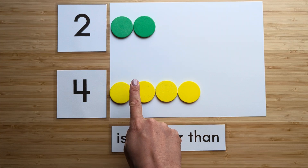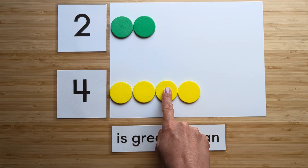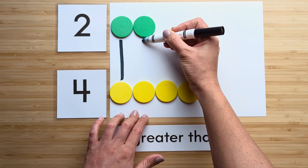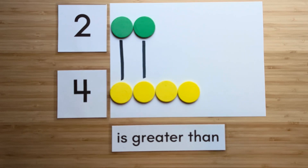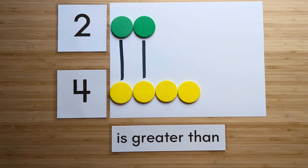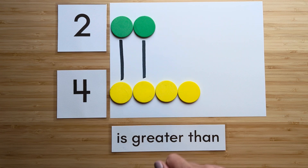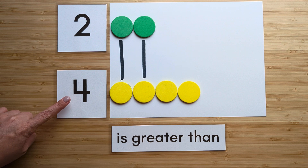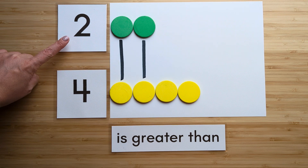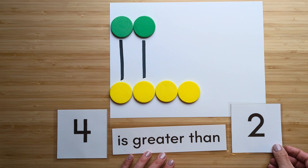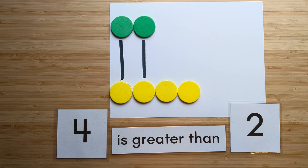One, two, three, four. Now let's compare. Match them up. Which one has extra? Four has extra. Four is greater than two. Nice job. Clear off your boards to try the next one.